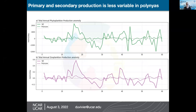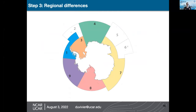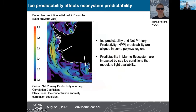Everything shown so far has been a pan-Antarctic view of polynias and their ecosystem effects. We're also looking at more regional scales and examining ice predictability and how that affects ecosystem predictability. We find that ice predictability, measured by anomaly correlation coefficient, is well aligned with net primary productivity predictability. This is true of the Ross Sea polynia, where there's enhanced predictability, but not in other polynia regions like the Amundsen/Bellingshausen Sea, and we're investigating why.